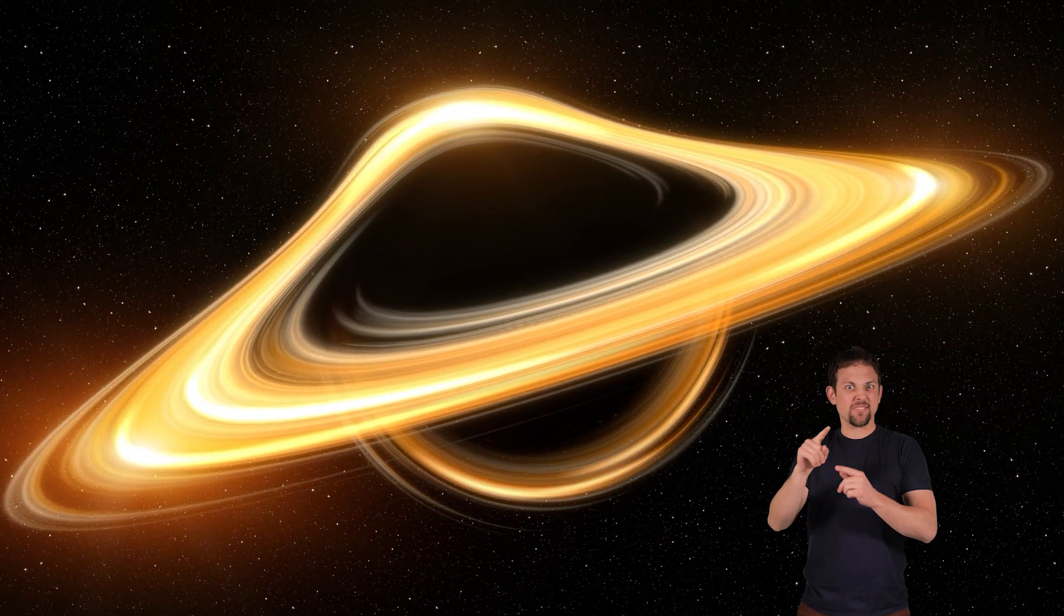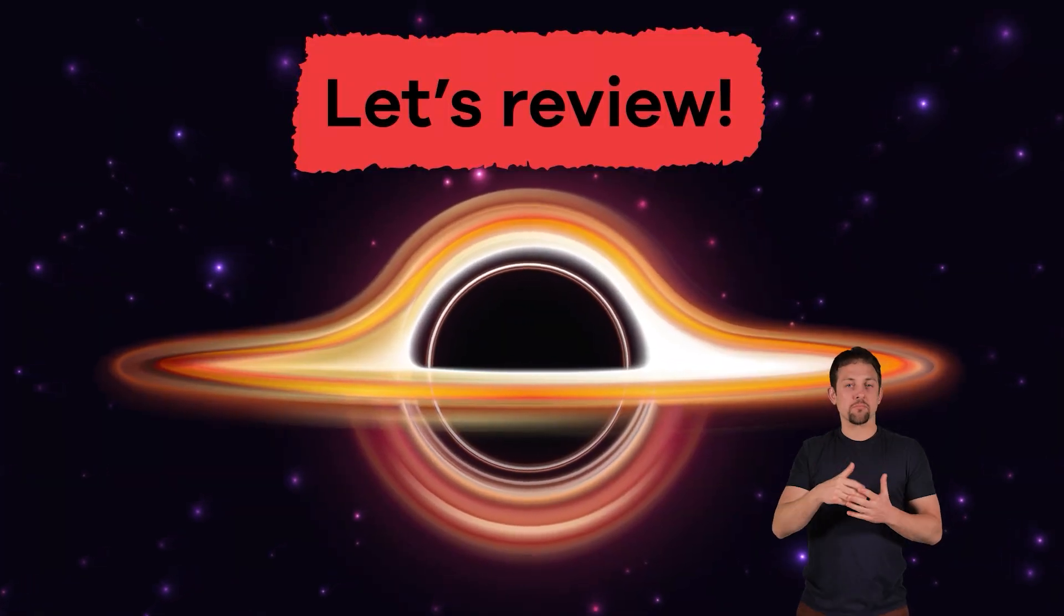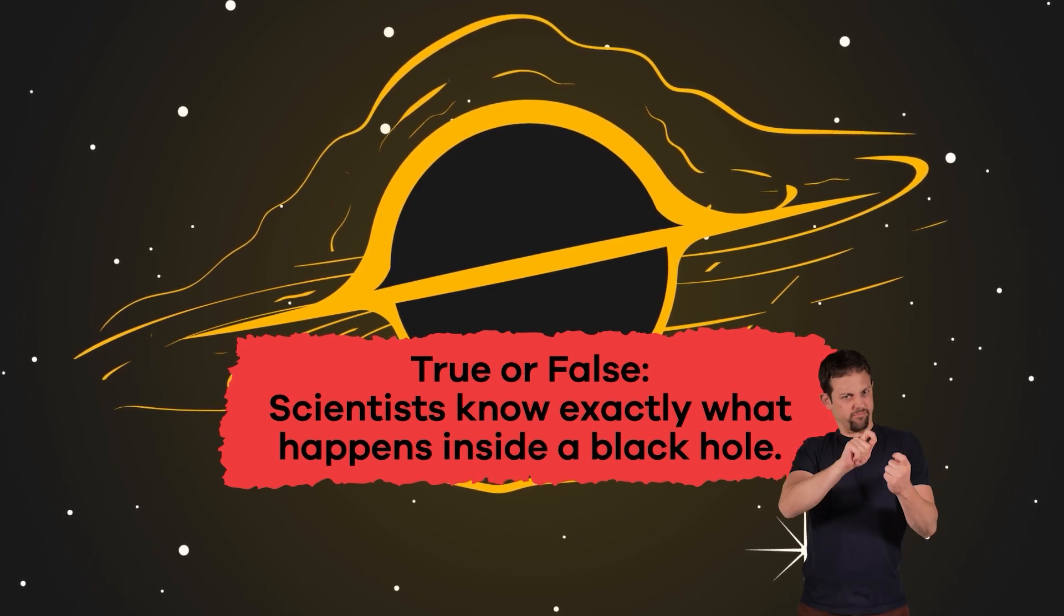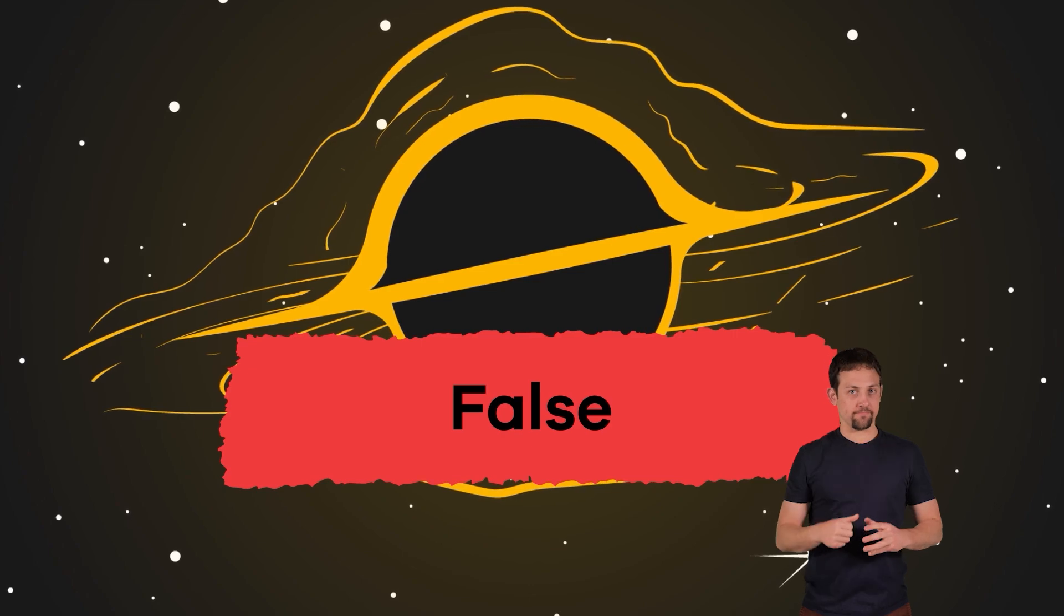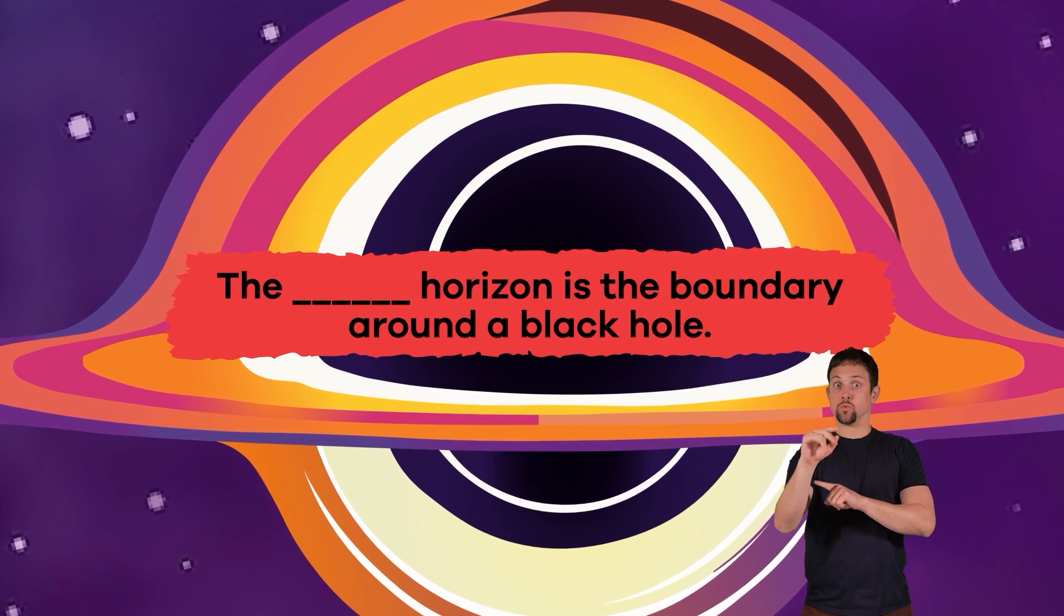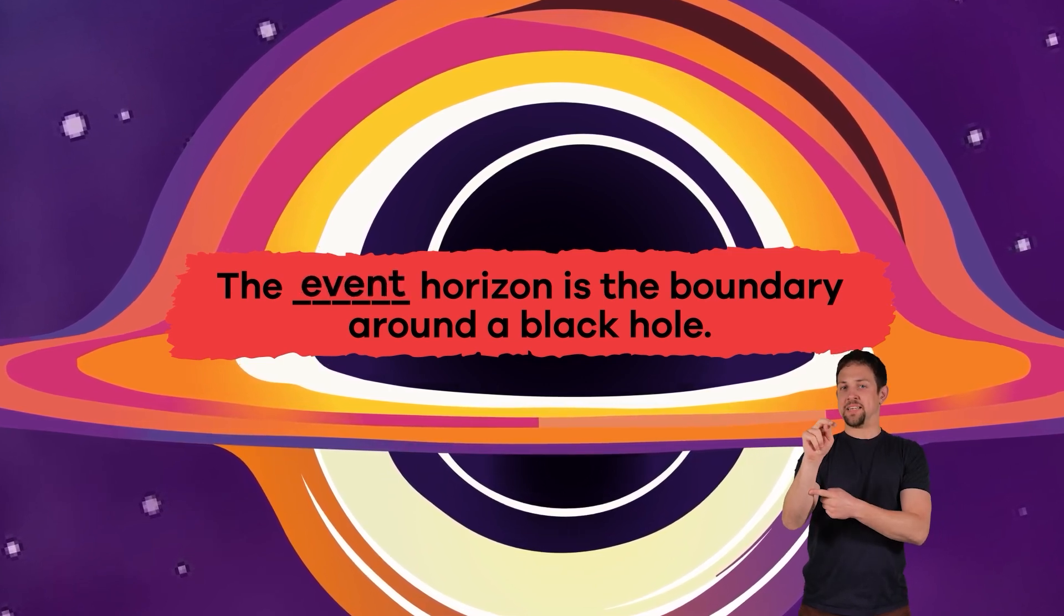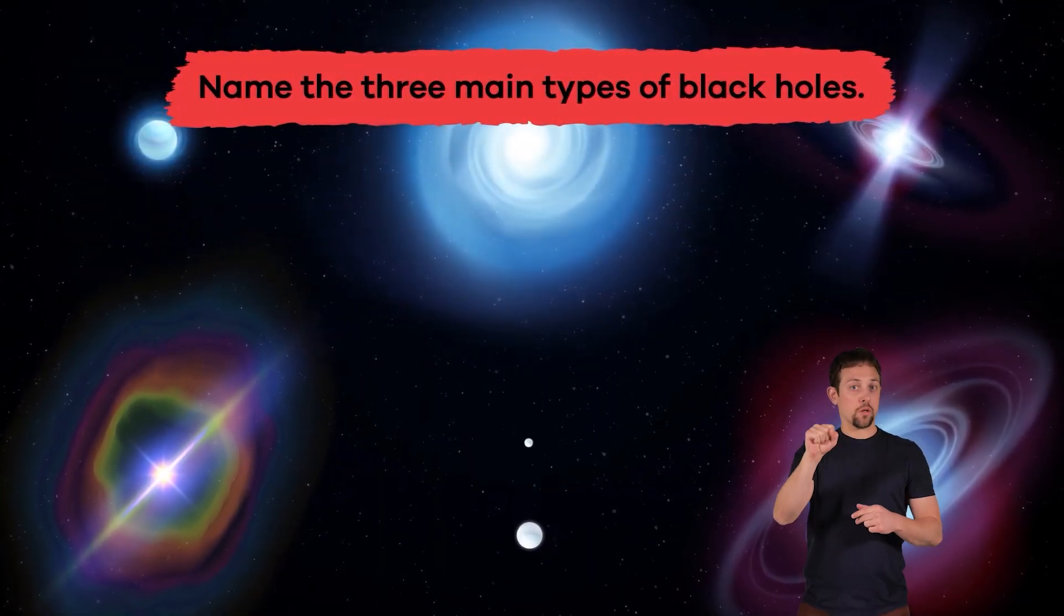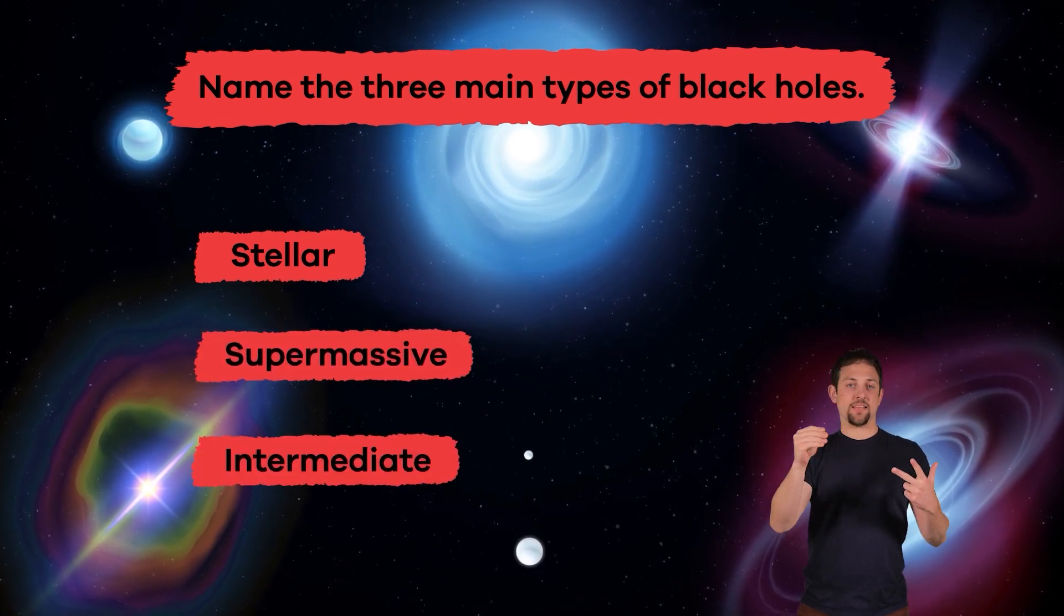We just learned a lot of black hole facts. Let's review to see what you remember. True or false: scientists know exactly what happens inside a black hole. False. Fill in the blank: The blank horizon is the boundary around a black hole. Event. Name the three main types of black holes. Stellar, supermassive, intermediate.